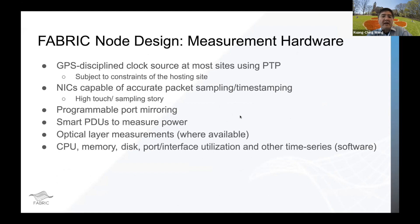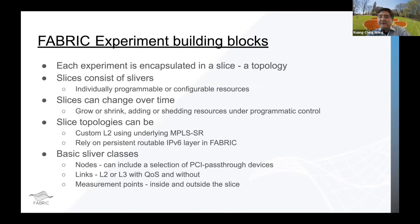One emphasized point for FABRIC is the measurement support. We have a measurement substrate with its own measurement network that will transfer all the data you're measuring. There's a wide range of measurements a researcher may want to use. For example, we have GPS-disciplined clocks at every node, so you have very precise time stamping that goes into all the packet traces you collect in your experiment. You can have port mirroring, you can measure power in the compute servers, and the optical layer has some limited measurements available as well.